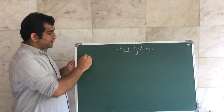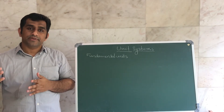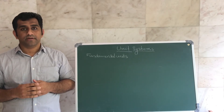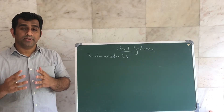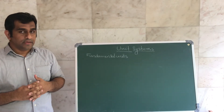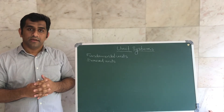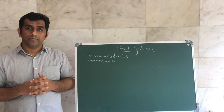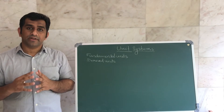There are two types of units: fundamental units and derived units. Fundamental units are the units of fundamental physical quantities. For example, meter is the fundamental unit for length, kilogram is the fundamental unit for mass, and second is the fundamental unit for time. For derived quantities, the unit is derived — for example, area has the unit meter squared. These are the two types of units: fundamental units and derived units.